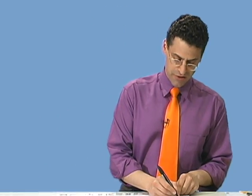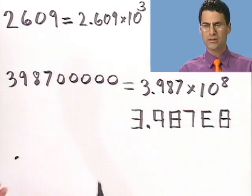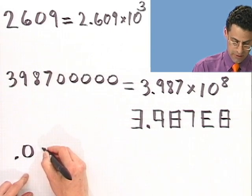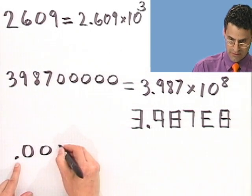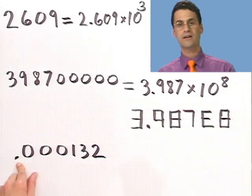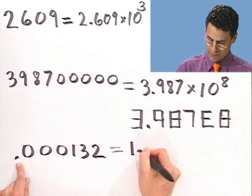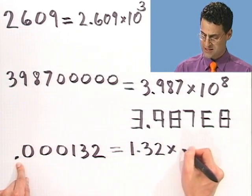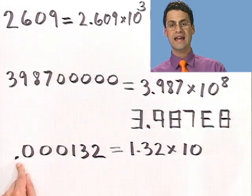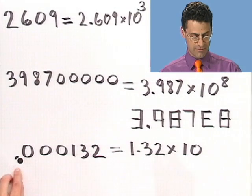This also works in reverse. Suppose you have a really, really tiny number. For example, consider 0.000132, a very tiny number indeed. But why write all those zeros? I could just write this as 1.32 if I promise to tell you how many decimal points to move. But now I'm actually going to have to move the decimal point this way, which means I'll be dividing by 10 to some power. And remember, to divide by 10 to a power means 10 to a negative exponent.